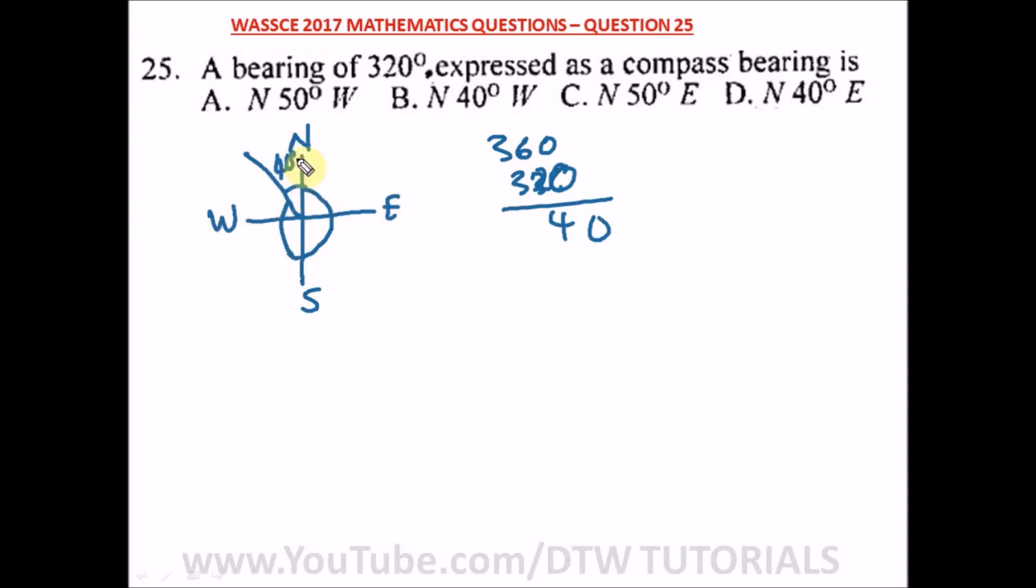So on the compass bearing we are North 40 West. We are 40 degrees northwest. That's how you do compass bearing, and the right option here is option B.